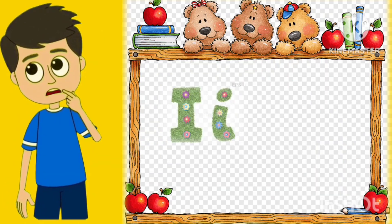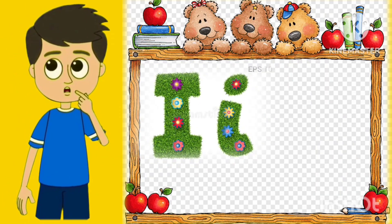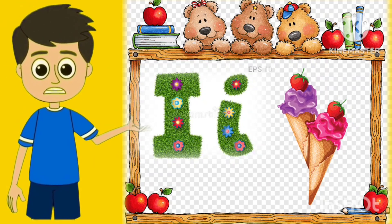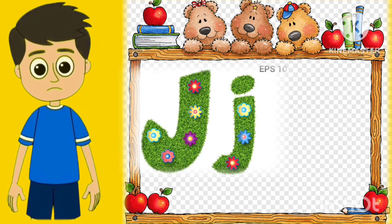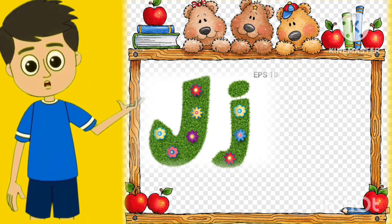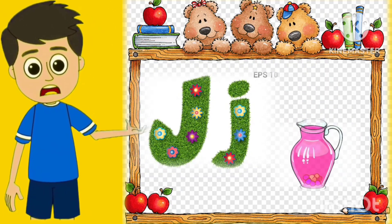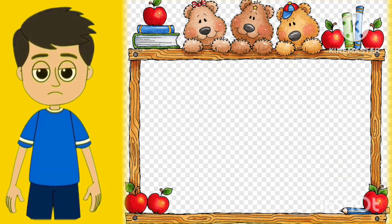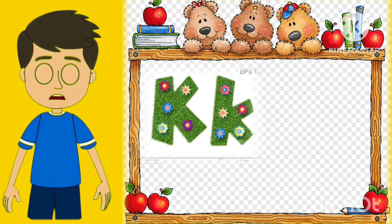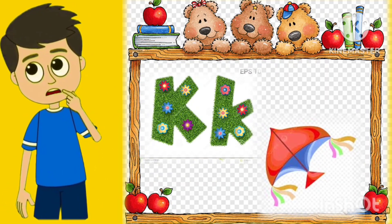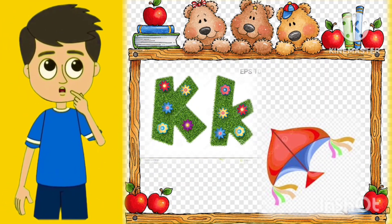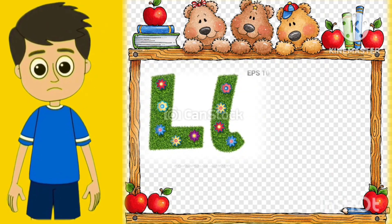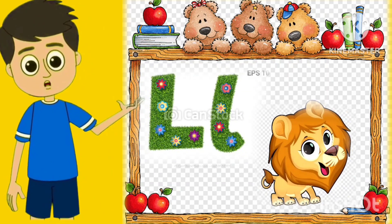I for Ice Cream, J for Jug, K for Kite, L for Lion.